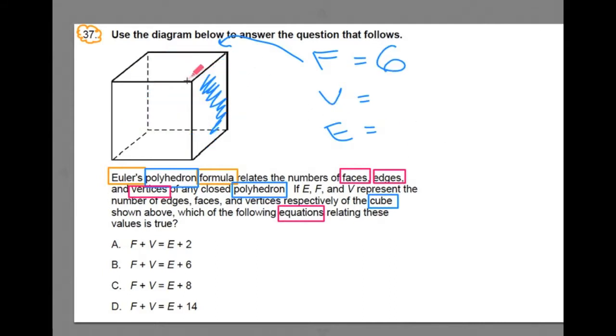Vertices. Vertices are where the faces come together and create that point. We've got one, two, three, four, five, six, seven, eight. There are eight vertices in a cube.